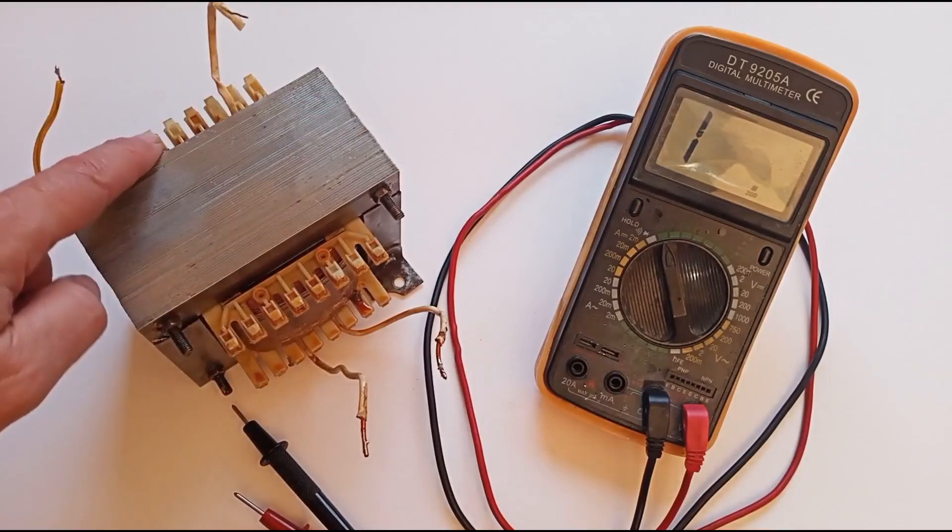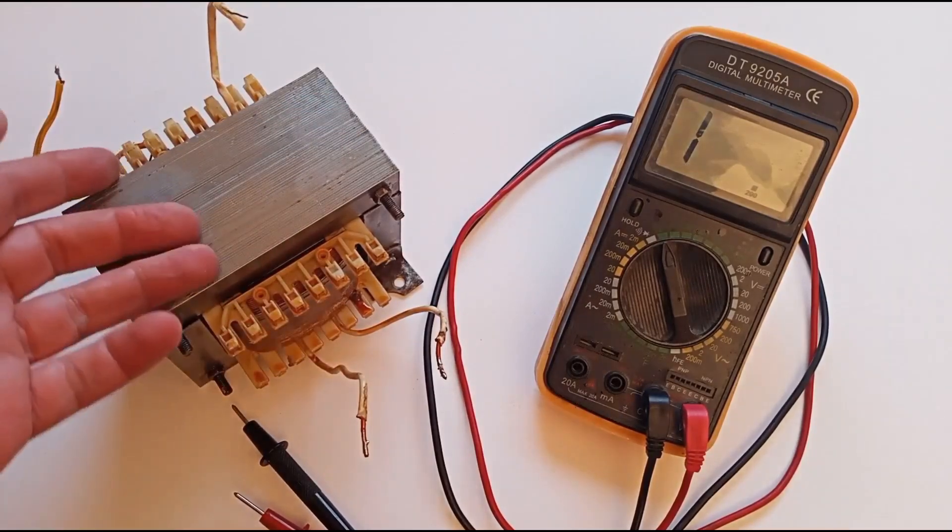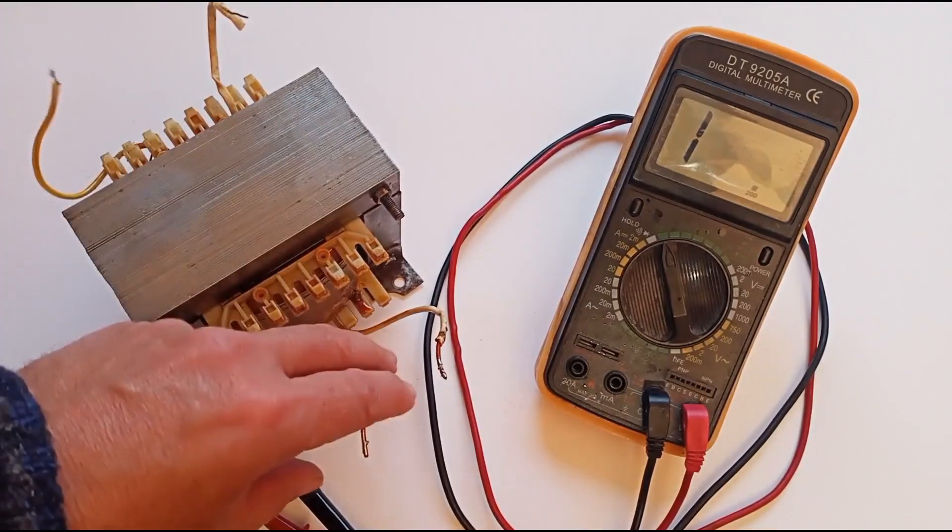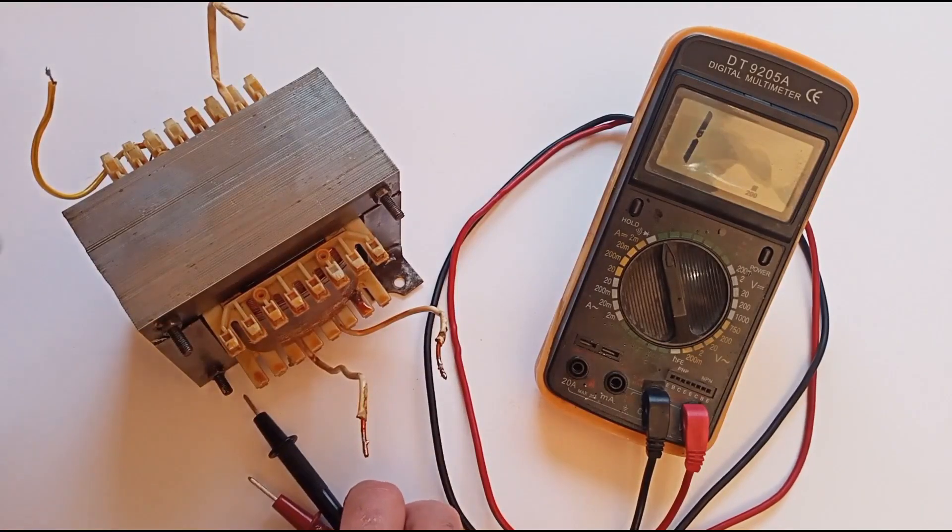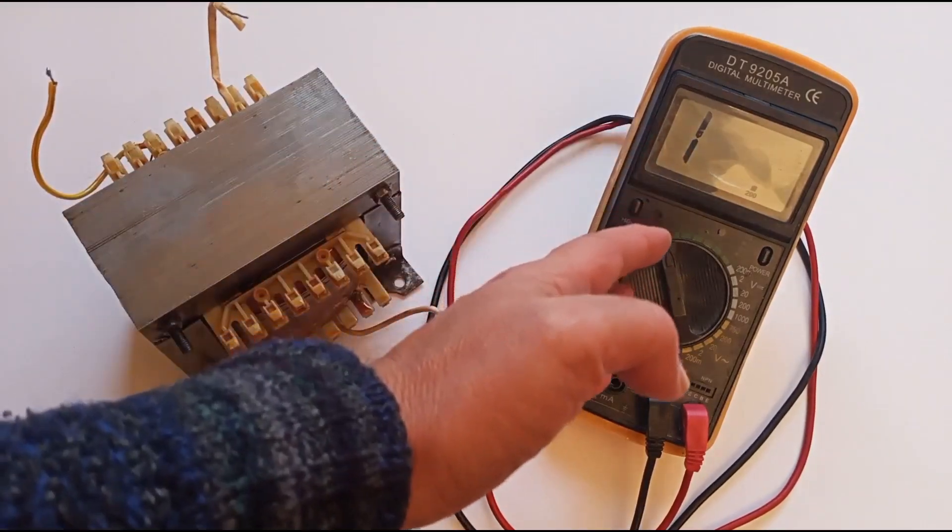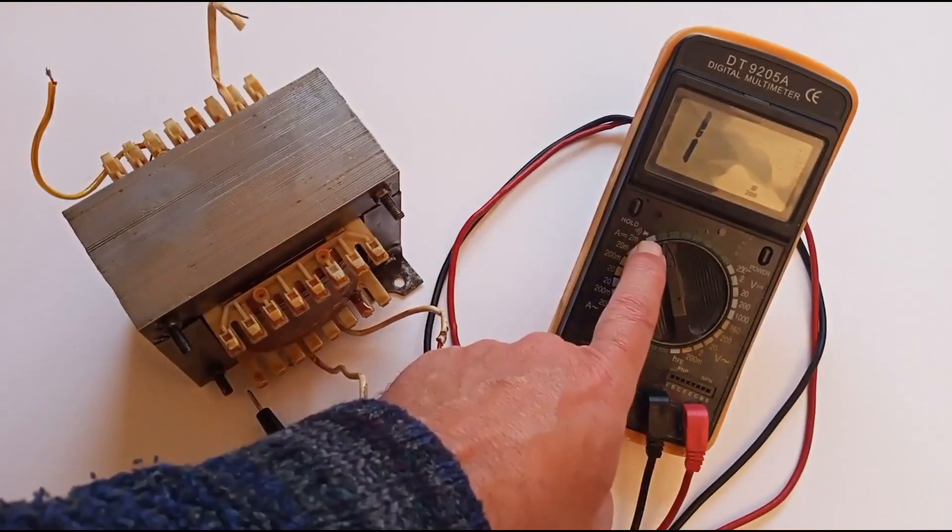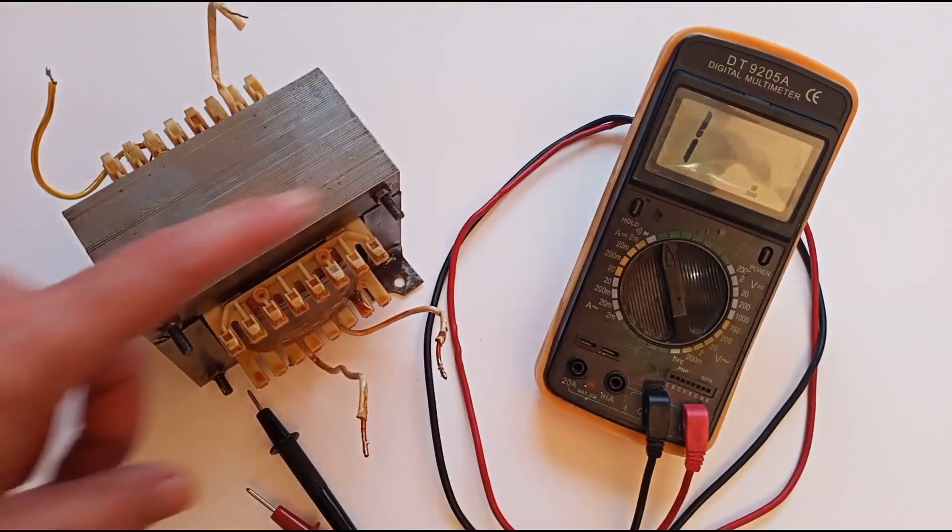Measuring the electrical resistance of a transformer's windings is a useful technique to identify the primary and secondary windings and distinguish high voltage windings from low voltage ones. A multimeter set to the resistance measurement scale (ohms) is required.